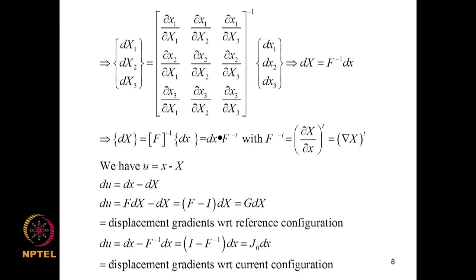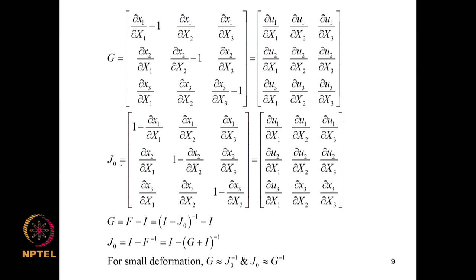Alternatively, expressing dX in terms of lowercase dx, we get dU = (I − F⁻¹)dx, and this matrix J₀ = I − F⁻¹ is the displacement gradient with respect to the current configuration. G and J₀ matrices represent displacement gradients with respect to reference and current configurations respectively. For small deformation, G and J₀ are related through a specific relation, so in small deformation these simplified relations apply.